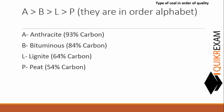Then next, B - Bituminous, 84% carbon content. Then L - Lignite, it has 64% carbon. Then P - Peat, it has 54% carbon.